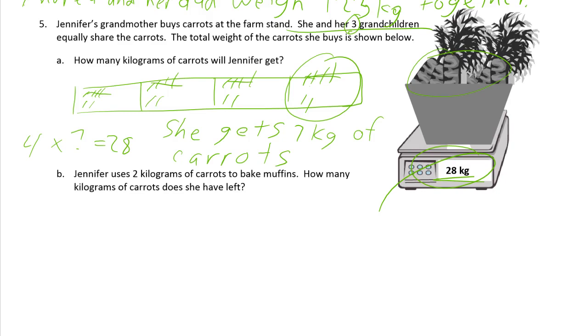Jennifer uses two kilograms of carrots to bake muffins. That's a lot, I hope that made a lot of muffins. How many kilograms of carrots does she have left? So she had seven kilograms. And if we're going to draw a tape diagram of this, you might already know the answer in your head, but we've got to draw something here. So these are the ones that, this is all the carrots she has is 7 kg. And for muffins, she's going to use 2 kg. And we're going to figure out what's the rest of it.